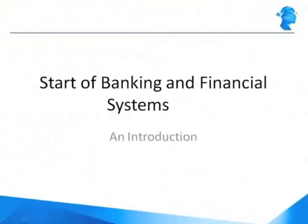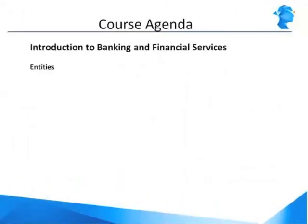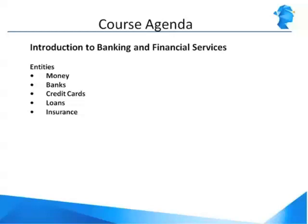We are going to take a look at the following entities that make this institution. It starts with money, which is the raw material as well as the finished product for this set of institutions. Then banks, which are the conduits of money. Credit cards, which we use in lieu of money. Loans, which help us get what we want before we can save up for it. Insurance products, which give us stability and assurance of security. And credit bureaus and securitization agencies, which aid all of this happening.